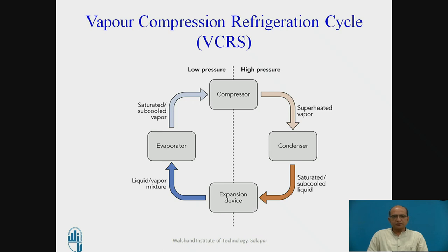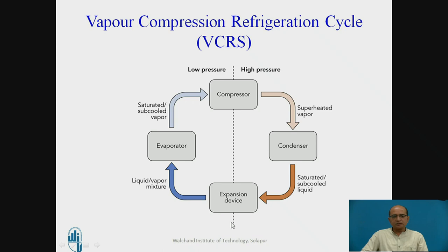Now we will discuss VCRS by considering this figure, which shows the four main parts. Apart from these four main parts, there are other ancillary parts also needed. When we consider any refrigeration system — whether it is for a refrigerator, cold storage, any cooling device, or an air conditioning system — we require these four elements.